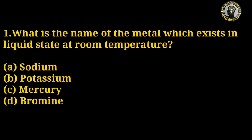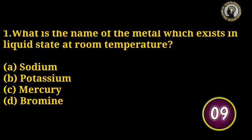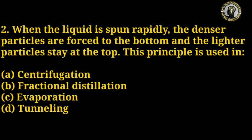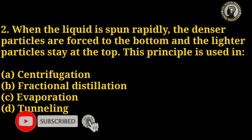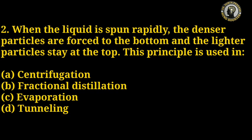Question number 1: What is the name of the metal which exists in liquid state at room temperature? Options: sodium, potassium, mercury, bromine. The right answer is C — mercury.